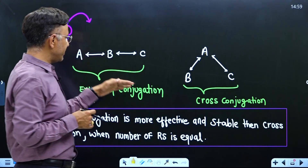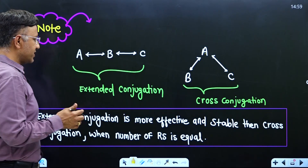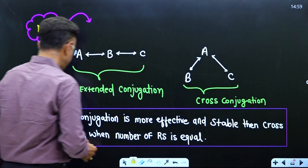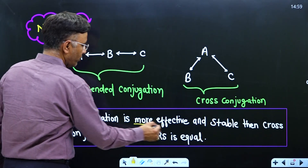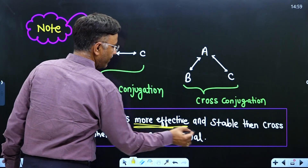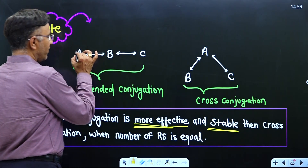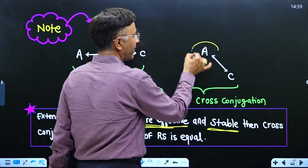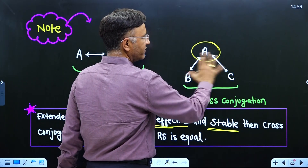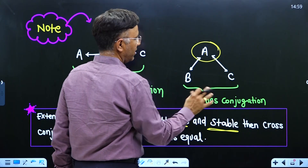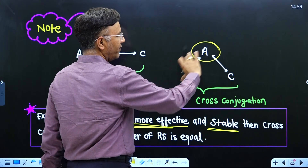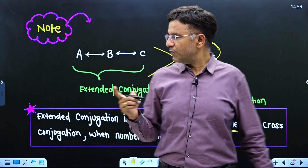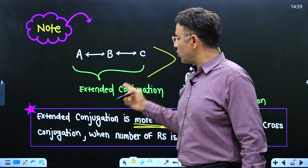If the resonance is consecutive, it is known as extended conjugation. If one resonance takes place with two others in parallel, it is known as cross conjugation. Extended is more effective and stable than cross because in extended conjugation, one pi bond delocalizes with the other consecutively, whereas in cross conjugation, one pi bond delocalizes with different parts, making it less effective.